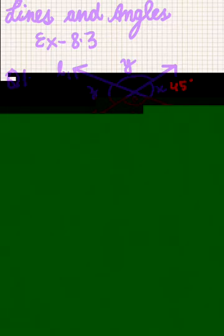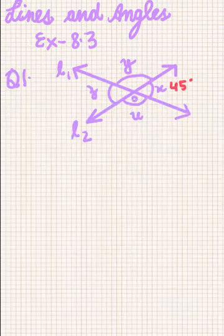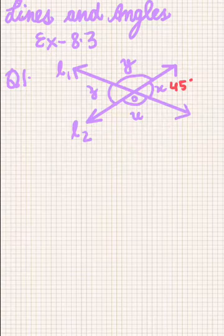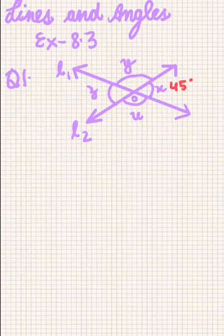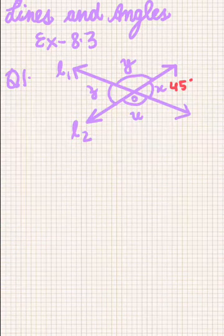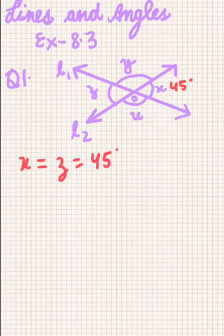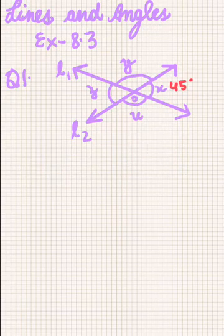Question 1 says that in the figure, lines L1 and L2 intersect at O, forming angles as shown in the figure. If x is 45 degrees, find the values of y, z, and u. Since the lines L1 and L2 intersect at point O, x will be equal to z, which equals 45 degrees, because of vertically opposite angles.